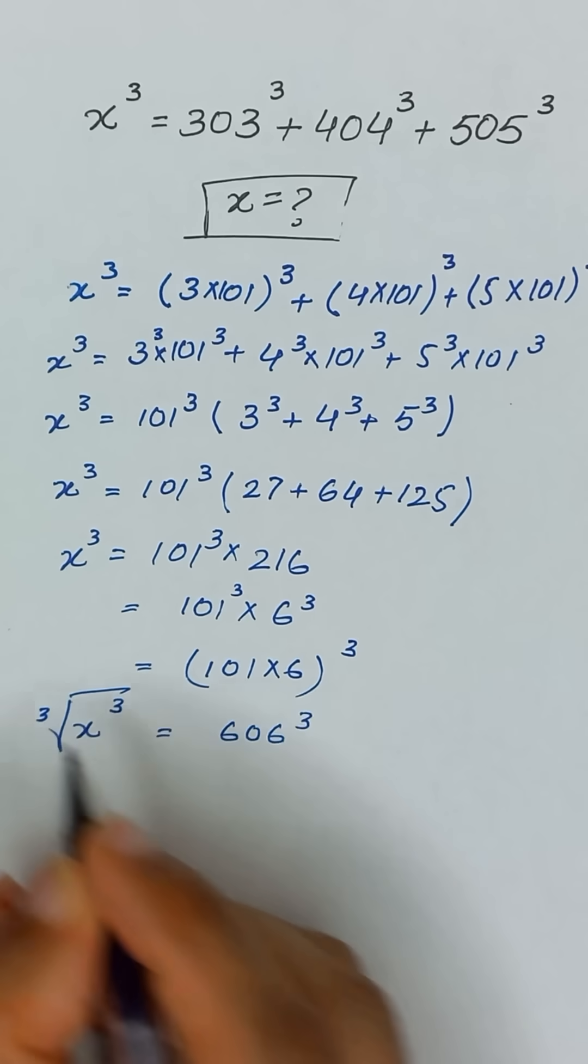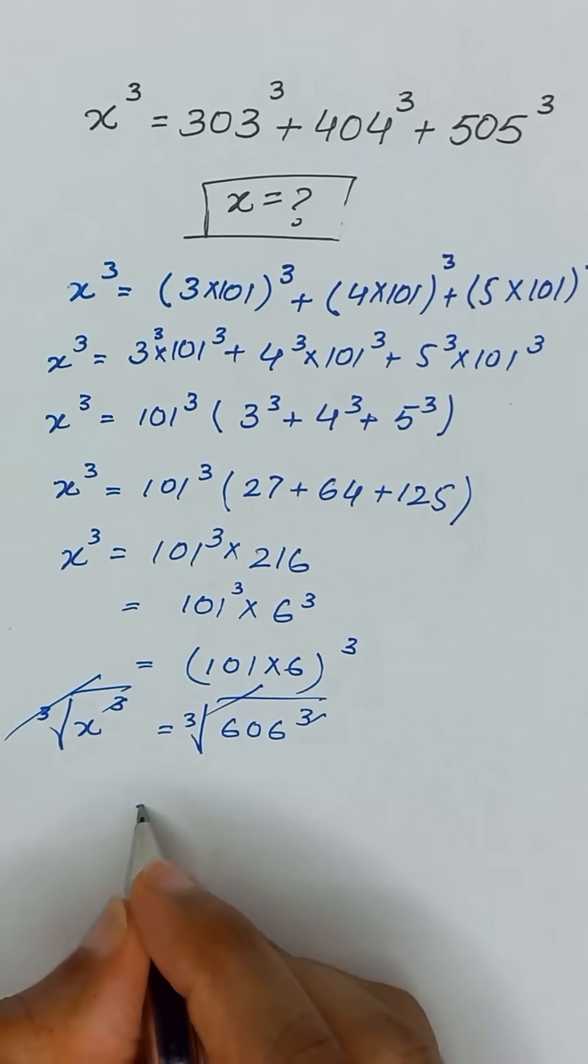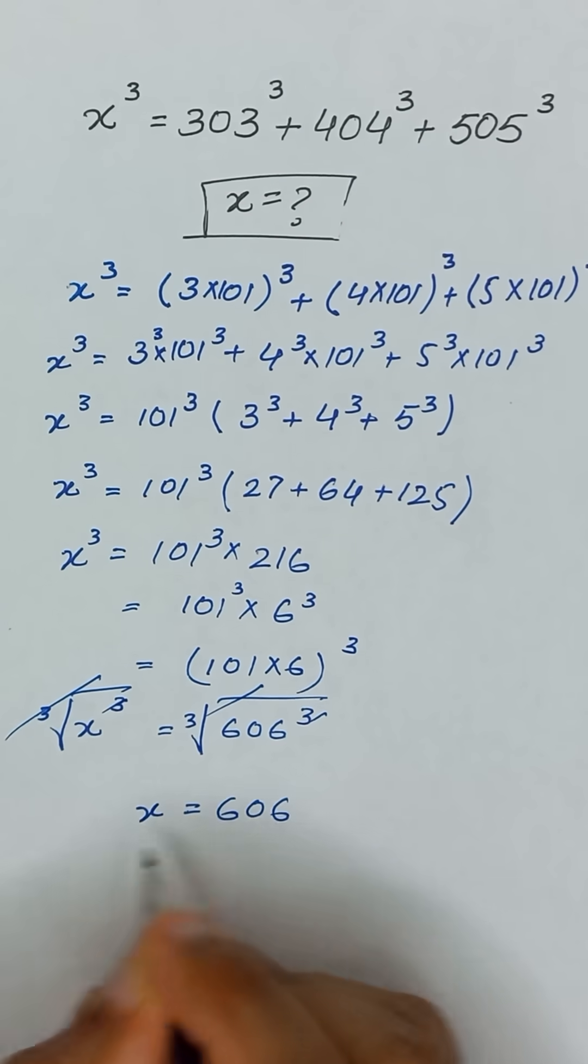Now we will apply cube root on both sides. So it will be cancelled out, and the value of x is equal to 606. Thanks for watching.